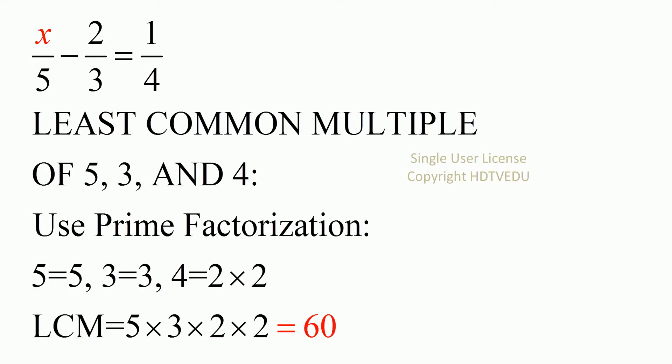We do not have a common denominator. So what do we do now? We have 3, 5, and 4. So what we do is find the least common multiple.